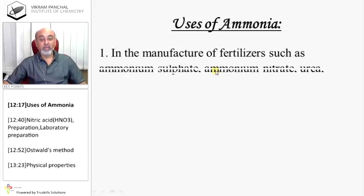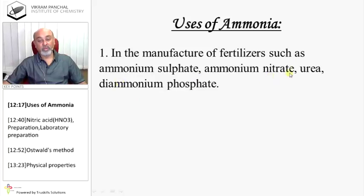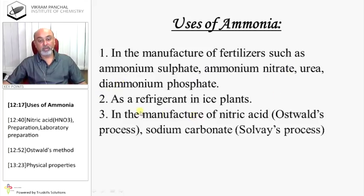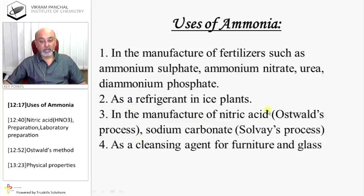Uses of ammonia: In the manufacturing of fertilizers such as ammonium sulfate, ammonium nitrate, urea, diammonium phosphate. As a refrigerant in ice plants. In the manufacturing of nitric acid via Ostwald's process and sodium carbonate. As a cleansing agent for furniture and glass surfaces.